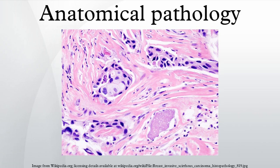Academic anatomical pathology is practiced at university medical centers by pathologists who are also university faculty. They often have diverse responsibilities that may include training pathology residents, teaching medical students, conducting basic, clinical, or translational research, and performing administrative duties — all in addition to diagnostic anatomical pathology practice. Pathologists in academic settings often subspecialize and may serve as consultants to other pathologists in their specific area of expertise.